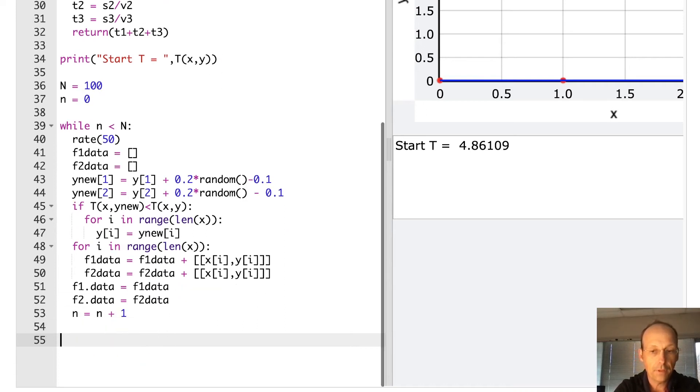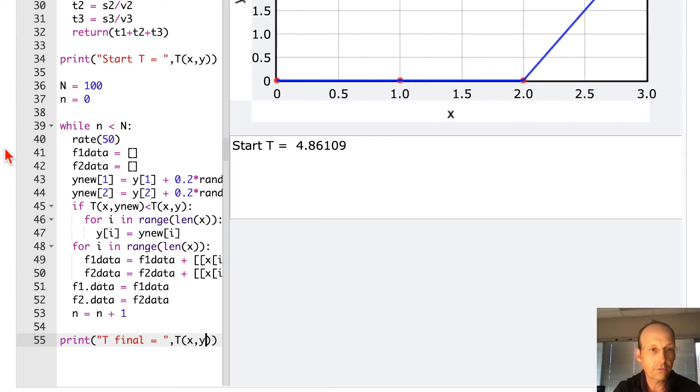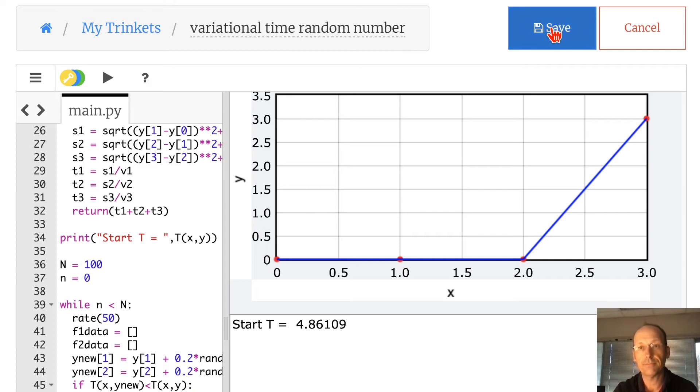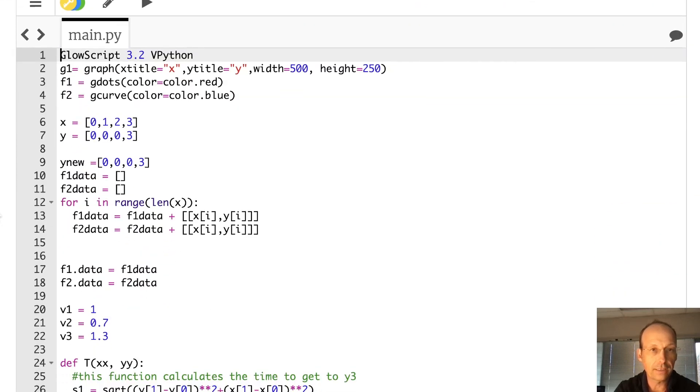That should be it. And then I increment in and let's go ahead and print out the final time. Print T final just to see if it's less, right? T final equals again T X, Y. And X and Y, remember, are lists. They're lists. Okay. Do you think this is going to run? What do you think? Let's go up here. I should save it. I didn't even give it a name. Variational time, random number. Save. Okay. Now let's run this thing.